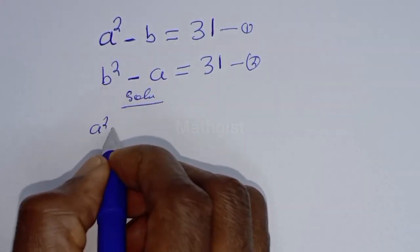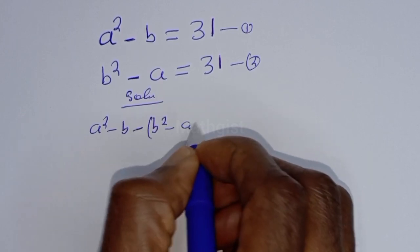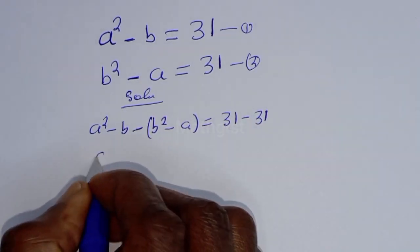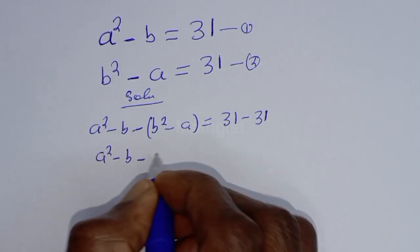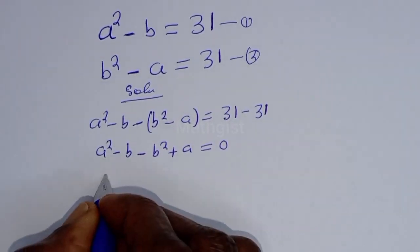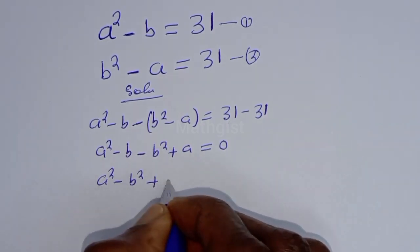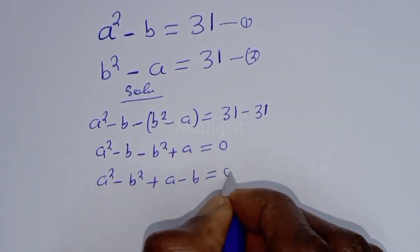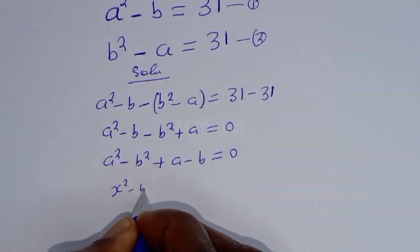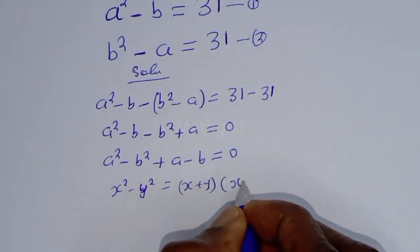That is: a² - b - (b² - a) = 31 - 31. This simplifies to a² - b - b² + a = 0, and rearranging: a² - b² + a - b = 0. This is in the form of the difference of squares, where x² - y² = (x + y)(x - y).